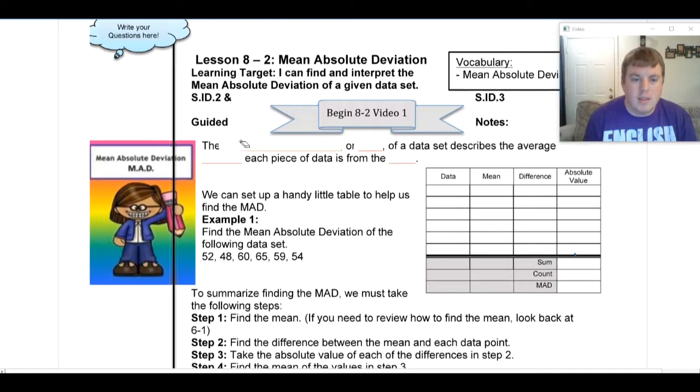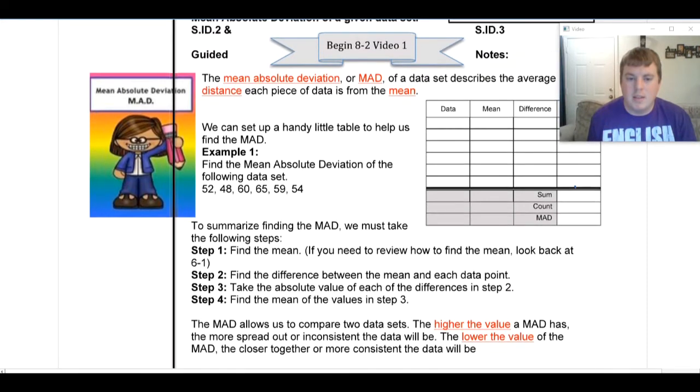Alright, so when we're talking about the mean absolute deviation, or the MAD, of a data set, we're describing the average distance that each piece of data is away from the mean. The mean absolute deviation gives us an estimate of how far apart and spread out our data is, or how close and consistent our data is. We are asked to find the mean absolute deviation of the following data set: 52, 48, 60, 65, and 54.